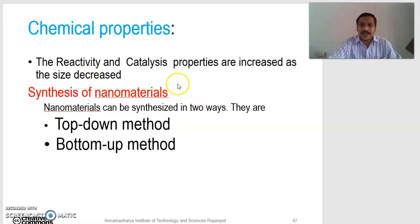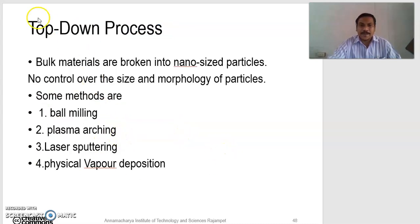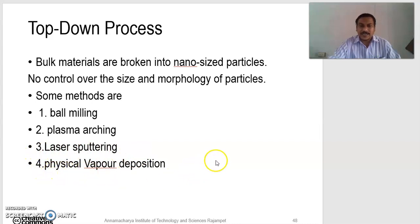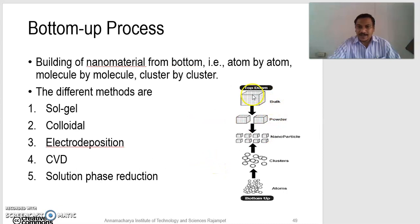Next, synthesis of nanomaterials. Nanomaterials can be synthesized in two ways: the top-down method and the bottom-up method. In the top-down process, bulk materials are broken into nanosized particles with no control over the size and morphology of the particles. Some methods are ball milling, plasma arcing, laser sputtering, physical vapor deposition, etc. In the top-down technique, we take the bulk material having size in the micrometer range, cut it into small pieces, small powder, and further cut into smaller particles called nanoparticles.